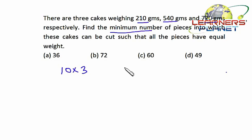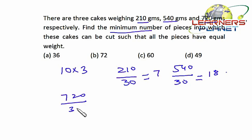So 210 divided by 30: in 210 grams, seven pieces of 30 grams will be there. Similarly, in 540 grams, 18 pieces will be there of 30 grams, and in 720 grams, 24 pieces will be there of 30 grams.